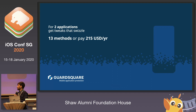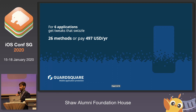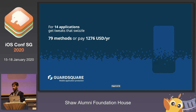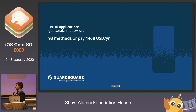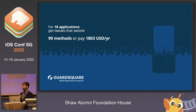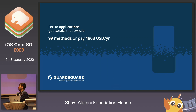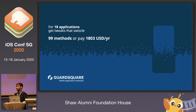Let's add some more to it — like Adobe Photoshop, Bear, Evernote, Duolingo, MyFitnessPal, Strava — all everyday use applications. Just taking a subset of 18, there's a choice: either get tweaks that swizzle 99 methods, or pay $1,800 a year. That's from a user perspective, of course, but you can imagine what the scale of that means for your application and your company.